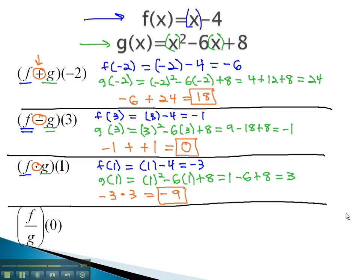The only operation left to consider is division, this time plugging 0 into the f equation. f of 0 is 0 minus 4, or negative 4.